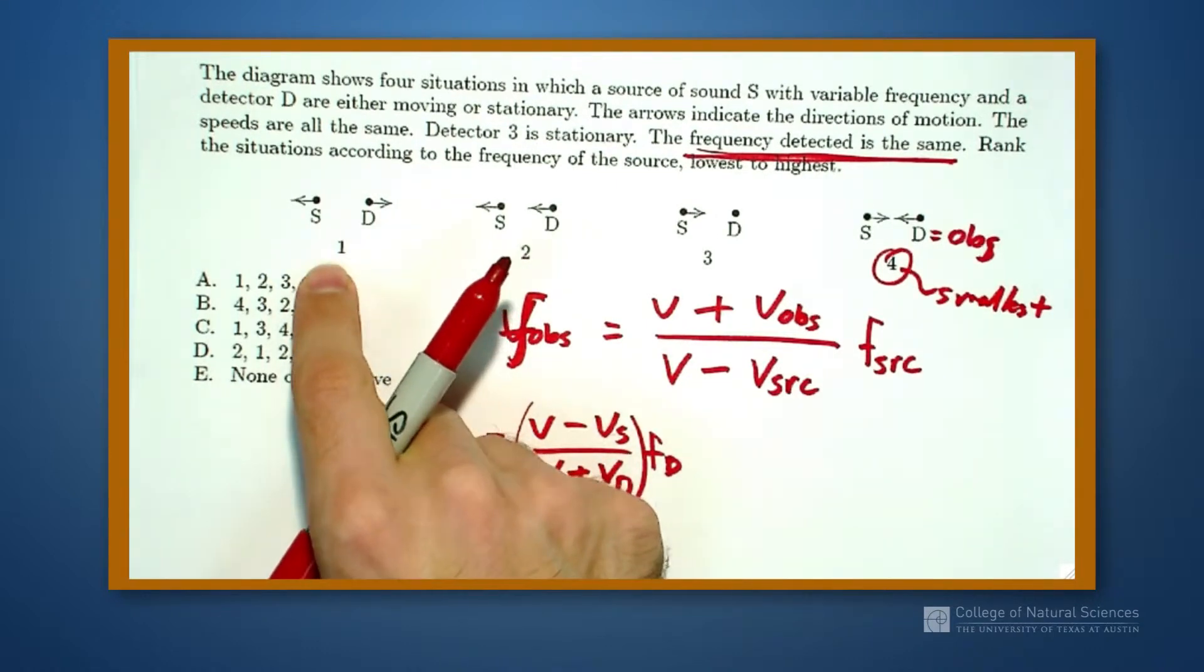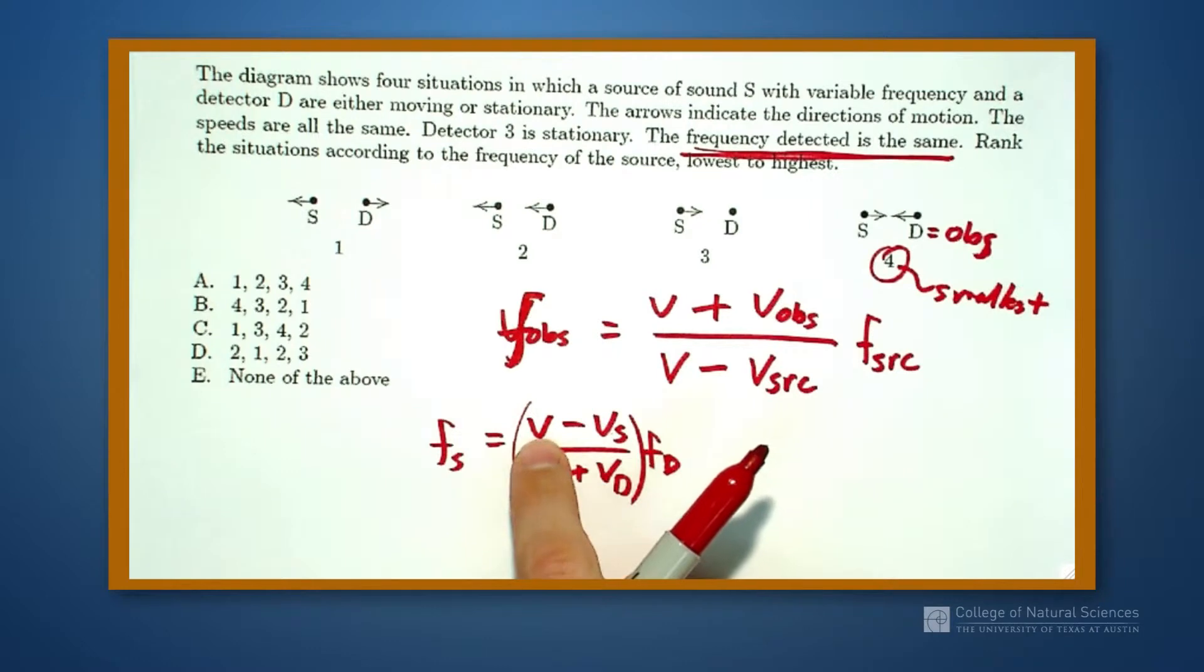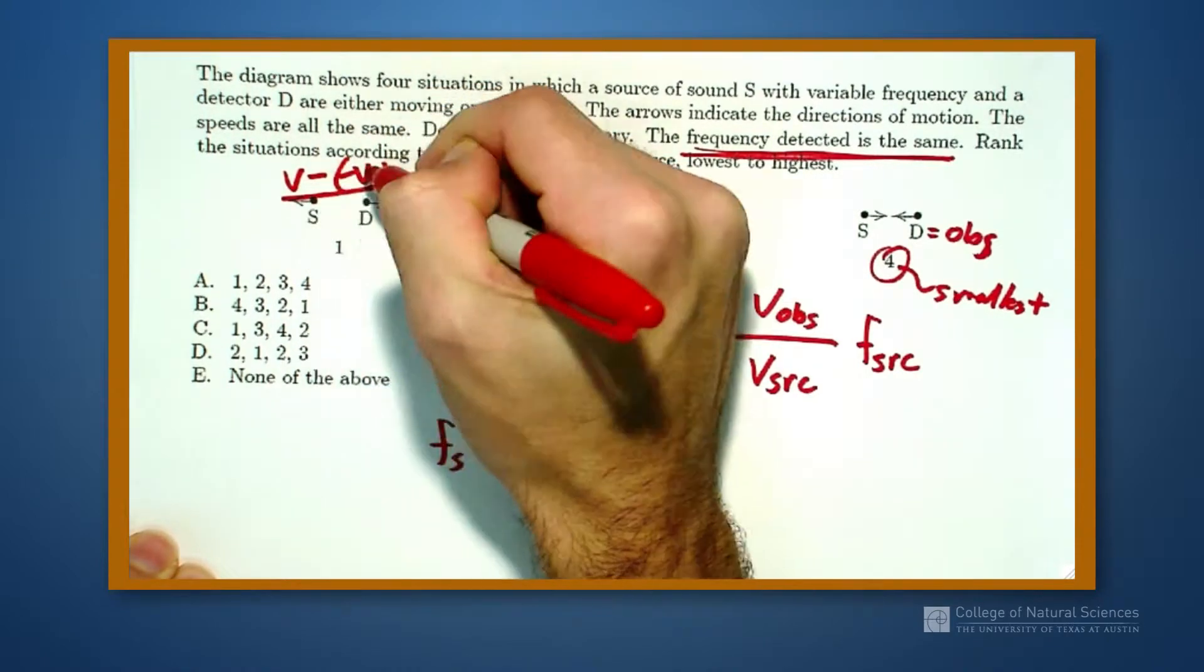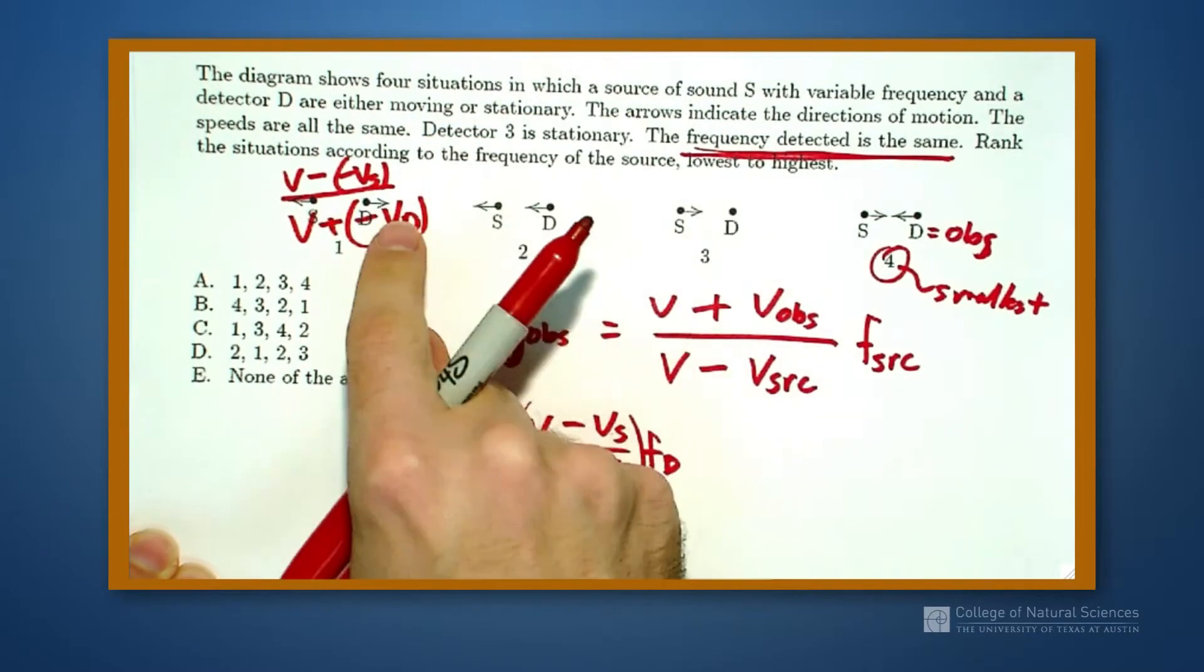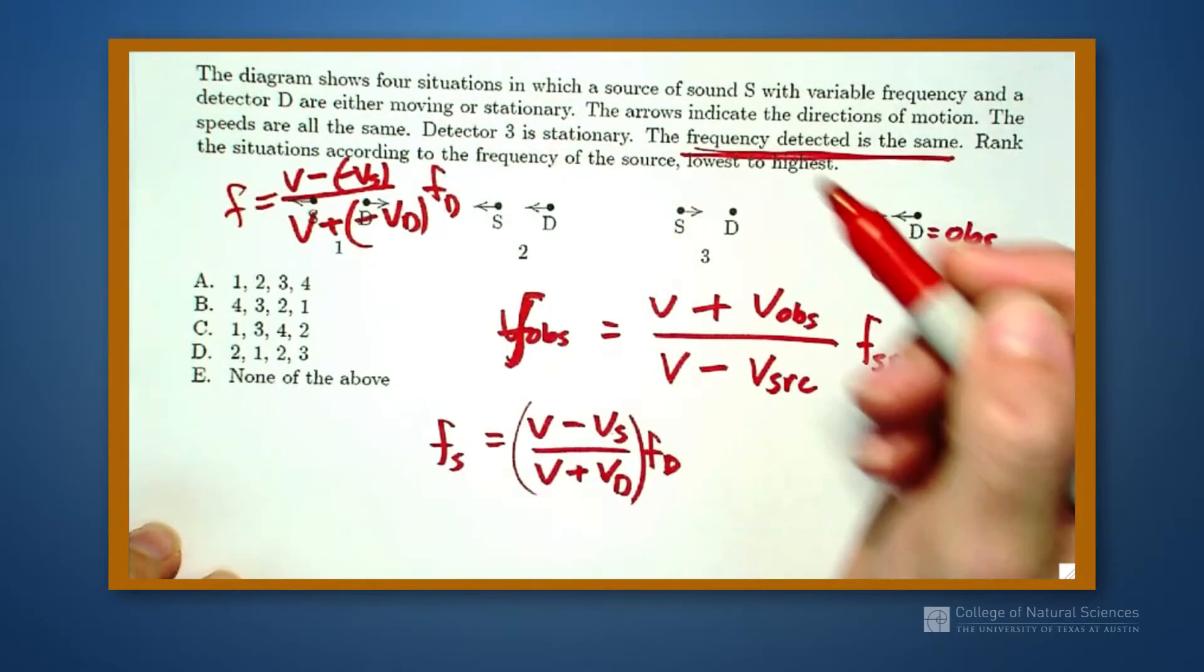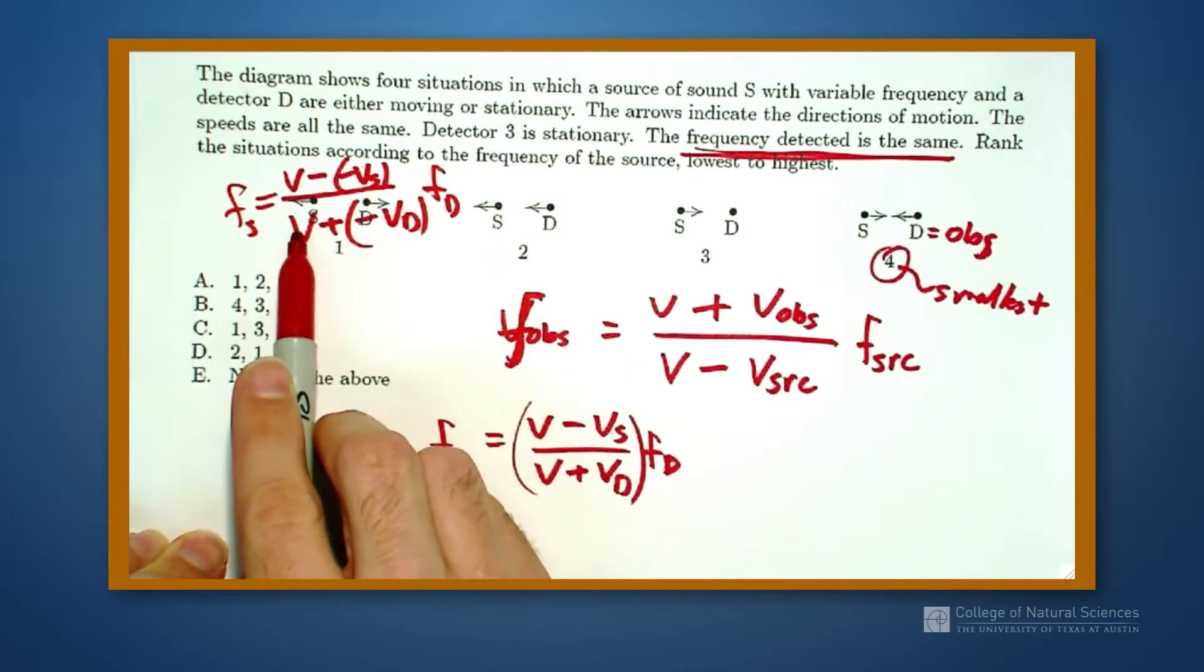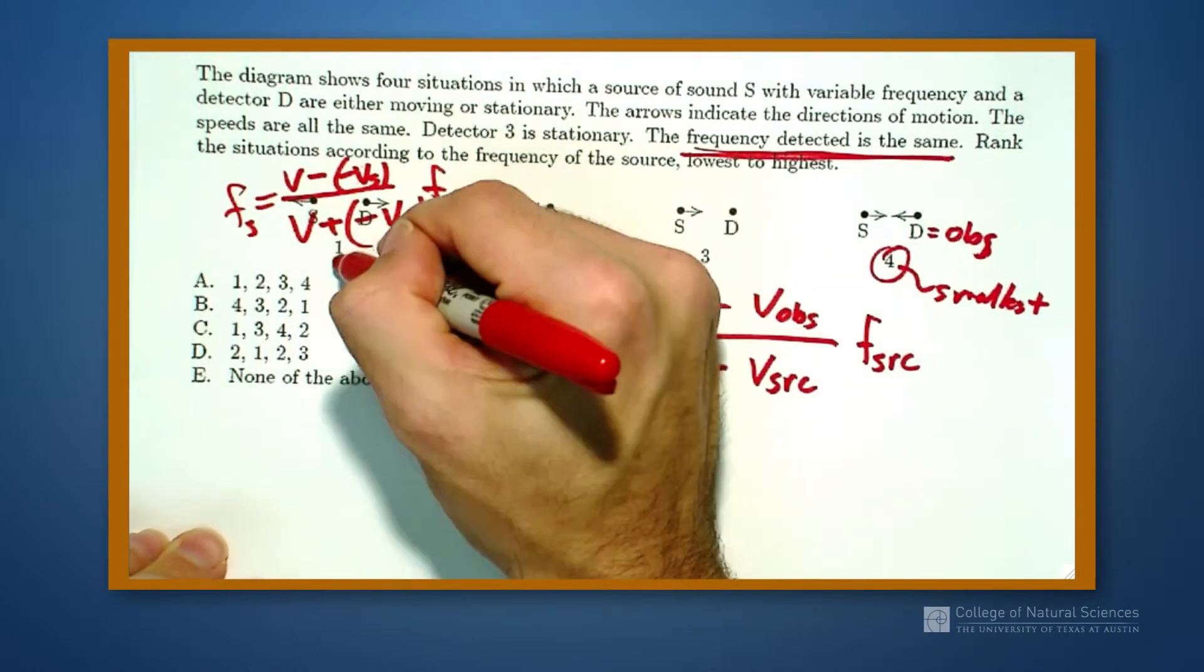If I look at case 1, case 1 is where I have, they're moving away from each other, so it's the velocity minus the source, but the source has another minus sign. So this is going to be velocity minus a minus source over a velocity plus a minus detector, because the detector is moving away from the source. And this is going to give us the frequency that our source would have to produce. So this is a large number, V plus VS, divided by V minus VD, so a large number divided by a small number. So this is going to be my largest.